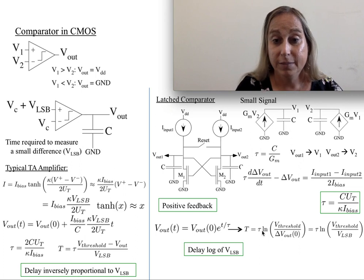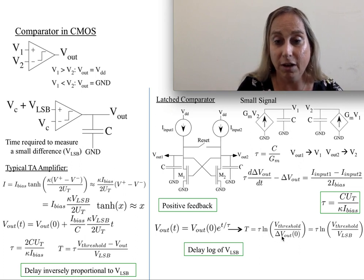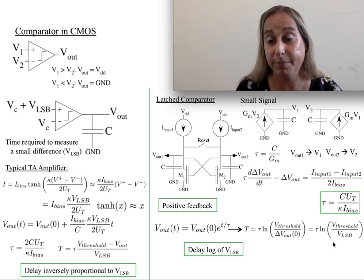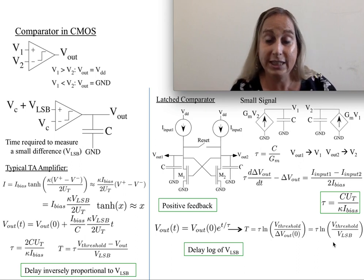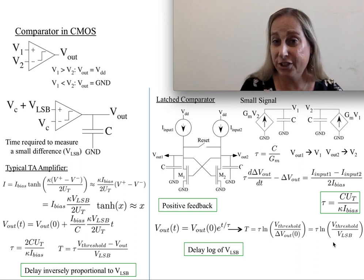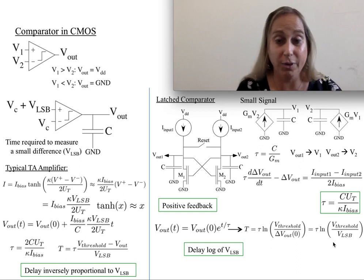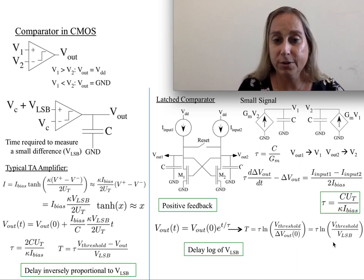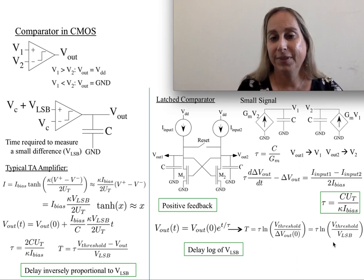When I look at this, then this tau shows up, so it's linear in tau, no surprise there. But notice it's a log of the LSB. So now an interesting thing happens. If I have a certain comparator that's working and I need to go from 8 bits to 12 bits, that's a factor of 16, but that only really changes things by about a factor of 4-ish, depending on what log base I'm working with.